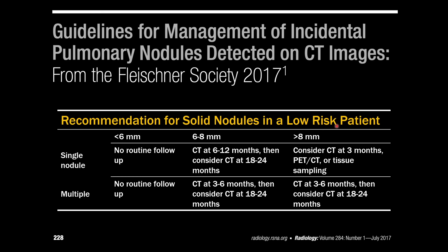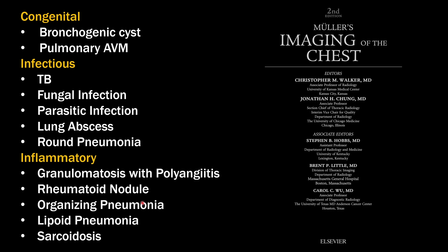The Fleischner guidelines are divided into solid nodules and subsolid nodules, and also low-risk and high-risk patients. A low-risk patient is a nonsmoker with no family history of lung cancer. Follow-up is based on nodule size, since as size increases, so does the chance of lung cancer. For low-risk patients with small nodules less than six millimeters, no follow-up is recommended. Even in heavy smokers, the chance that a small nodule under six millimeters is lung cancer is less than one percent, so in a low-risk patient that chance is even less.